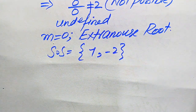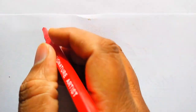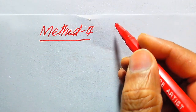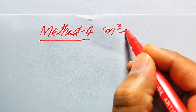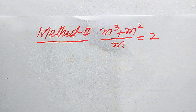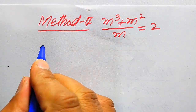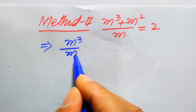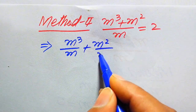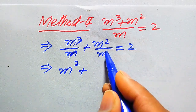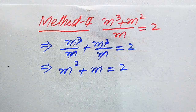Now we solve this problem using the second method. The given equation is (m³ + m²) / m = 2. We break this fraction: m³/m + m²/m = 2. Simplifying, m and m cancel in both terms, giving m² + m = 2.